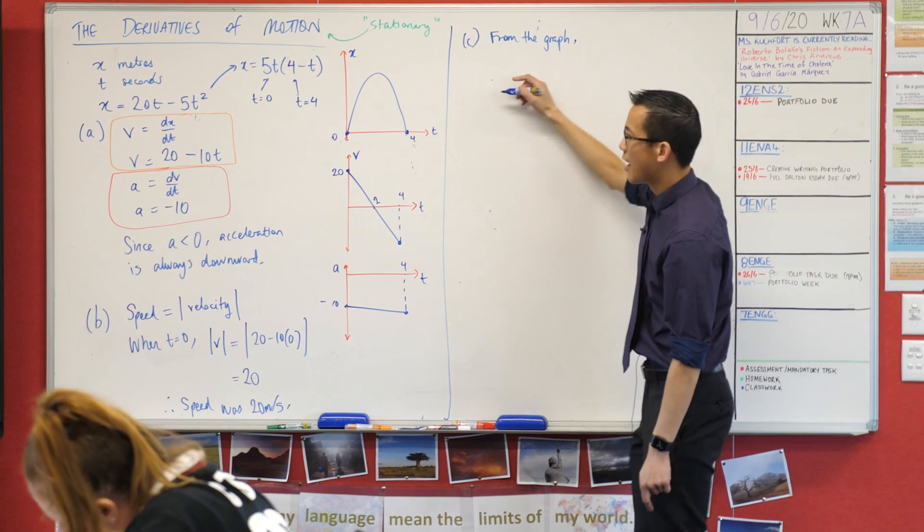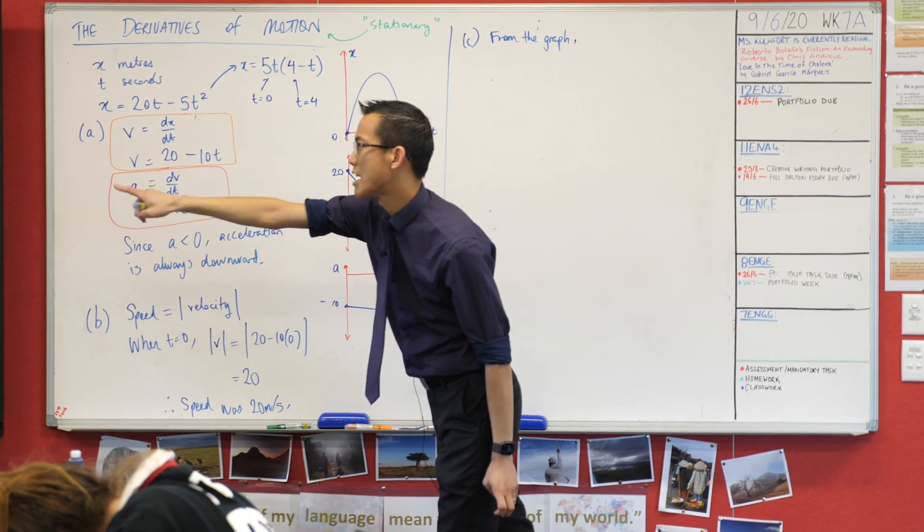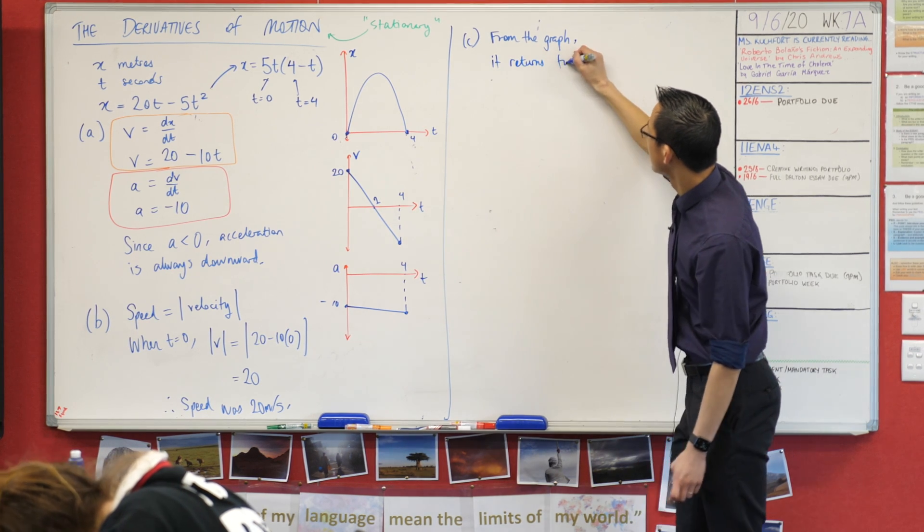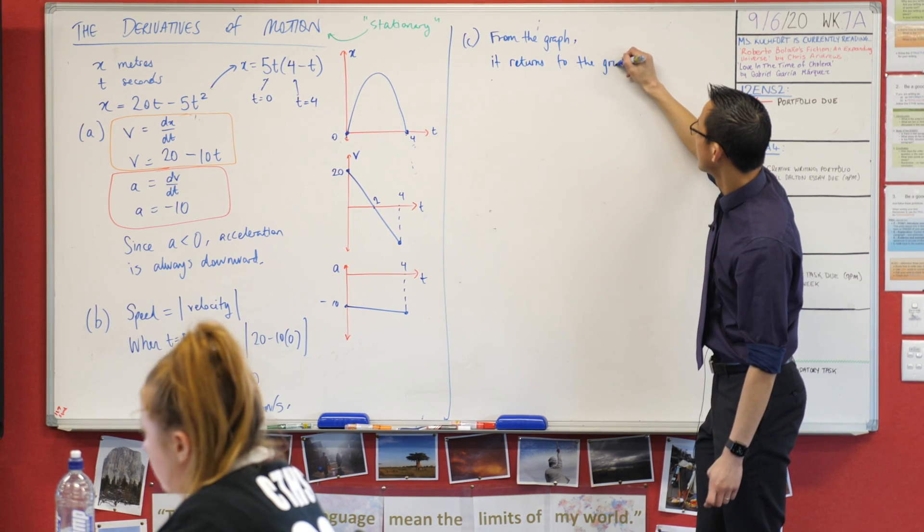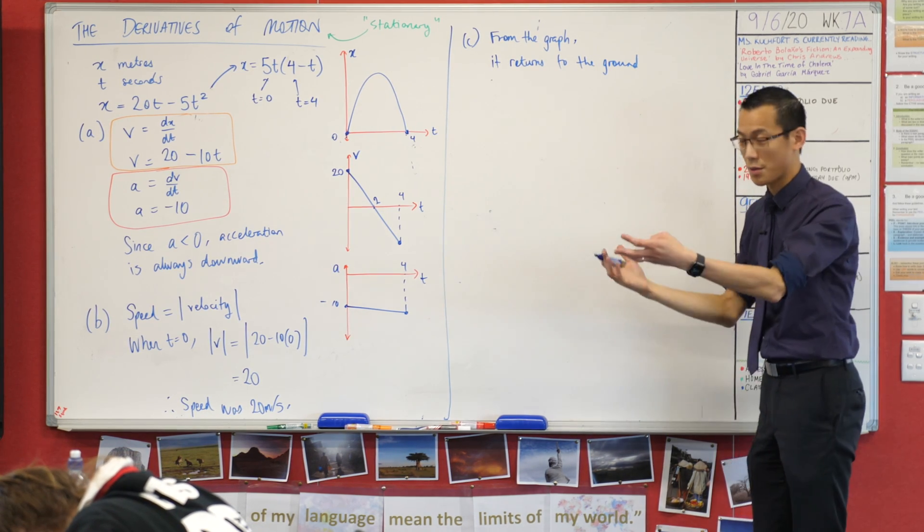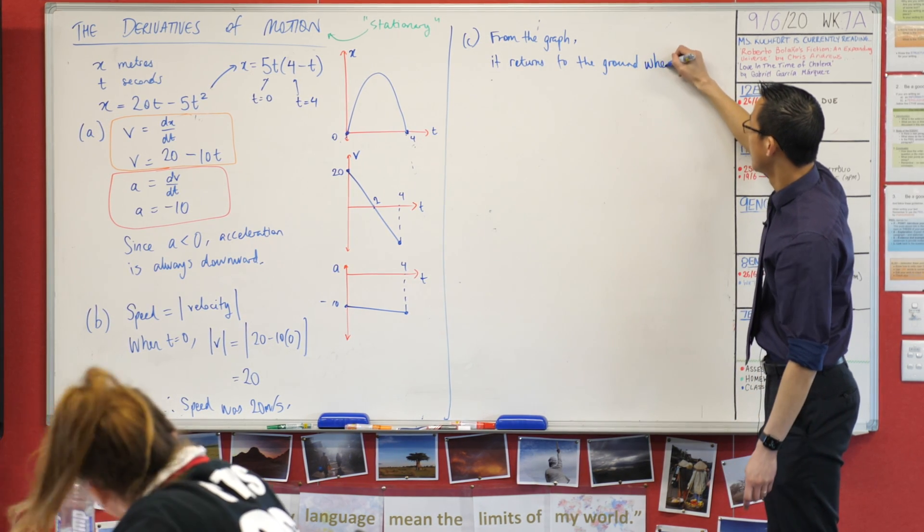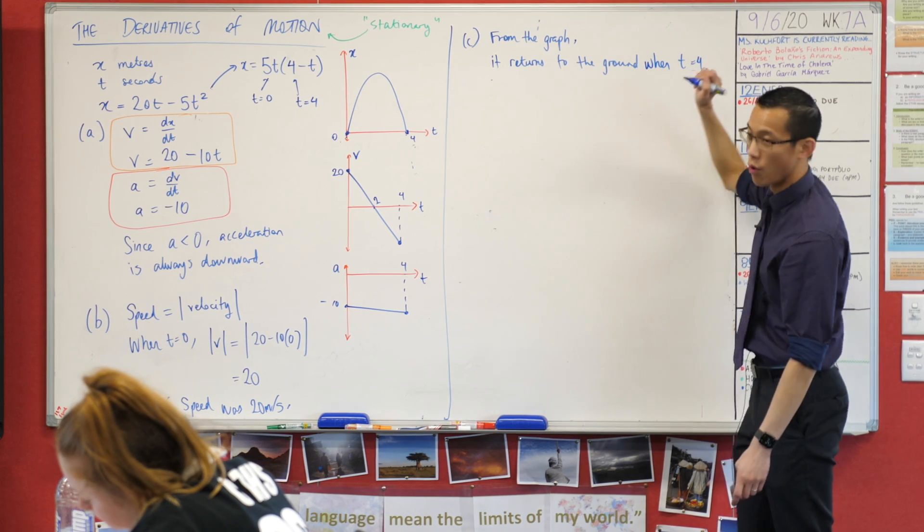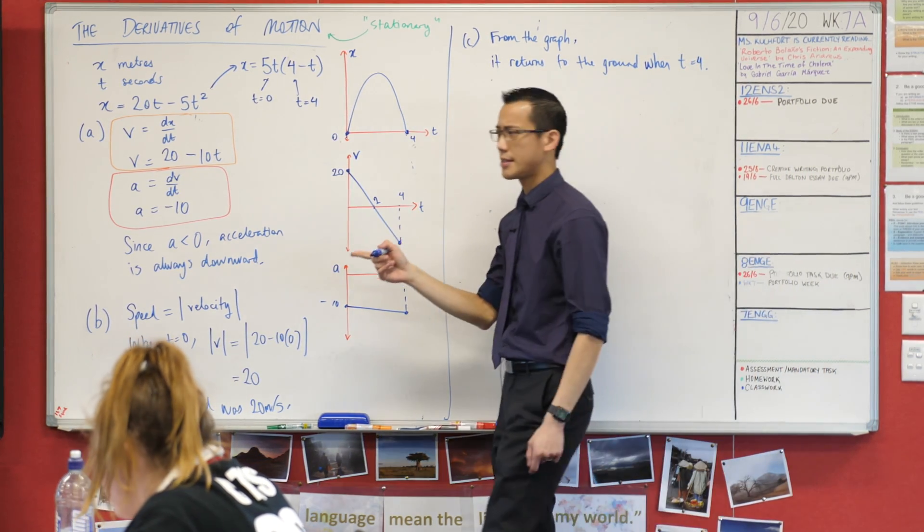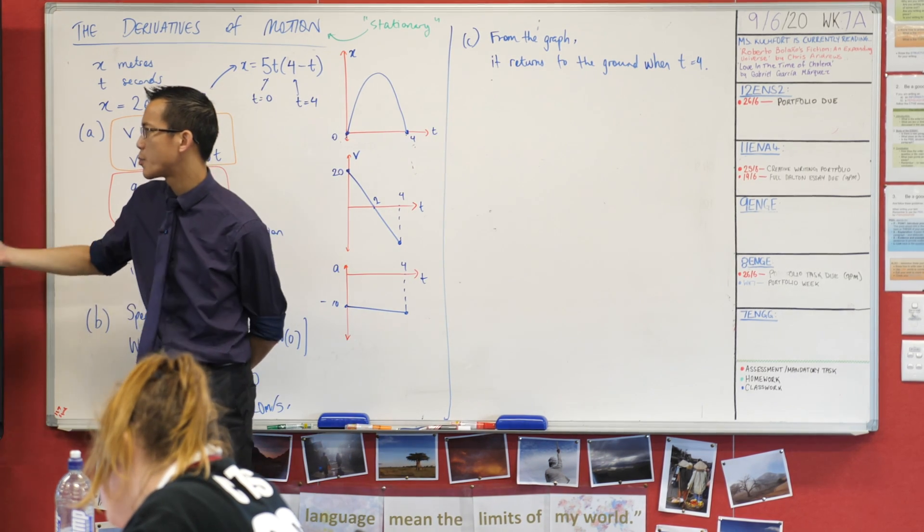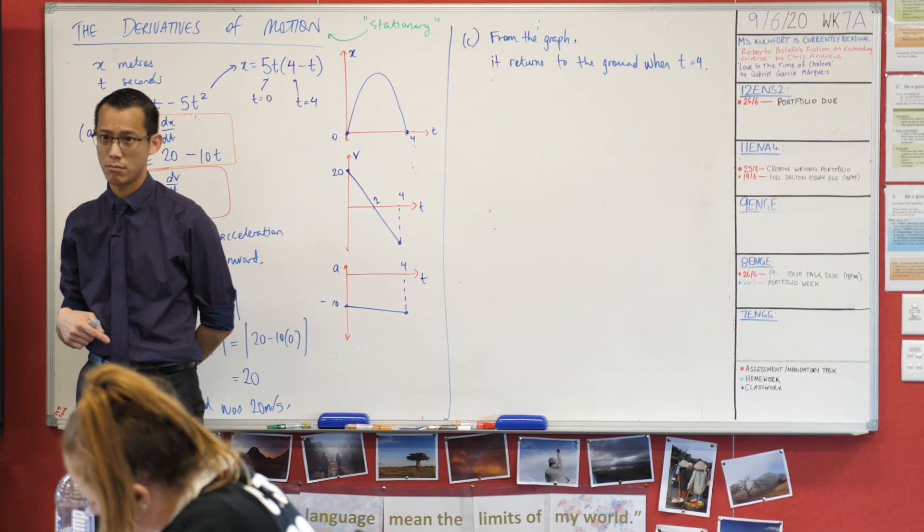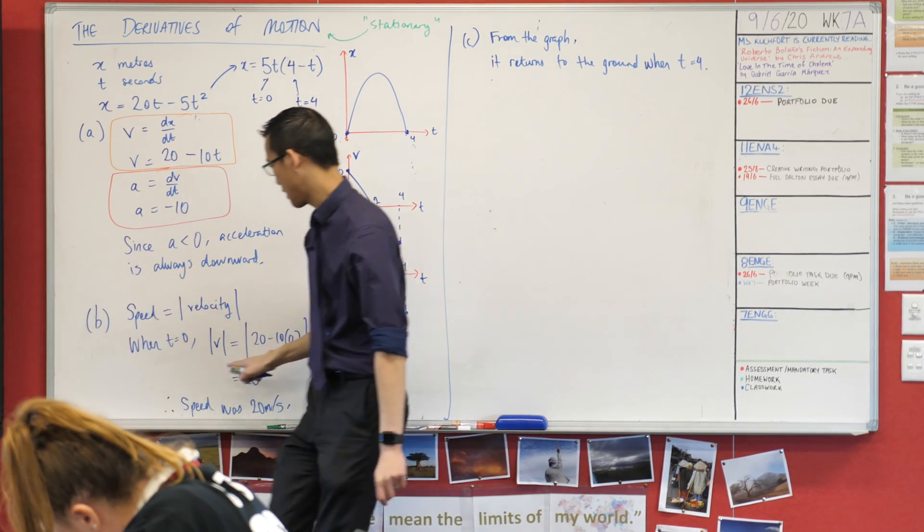So from the graph, what's the word? It says it returns to the ground and normally we would say at x equals something but I'm going to say when time equals four, so after four seconds. Now how do I answer this next part? How do I show that its speed then is equal to the initial speed? How did I find this speed again?